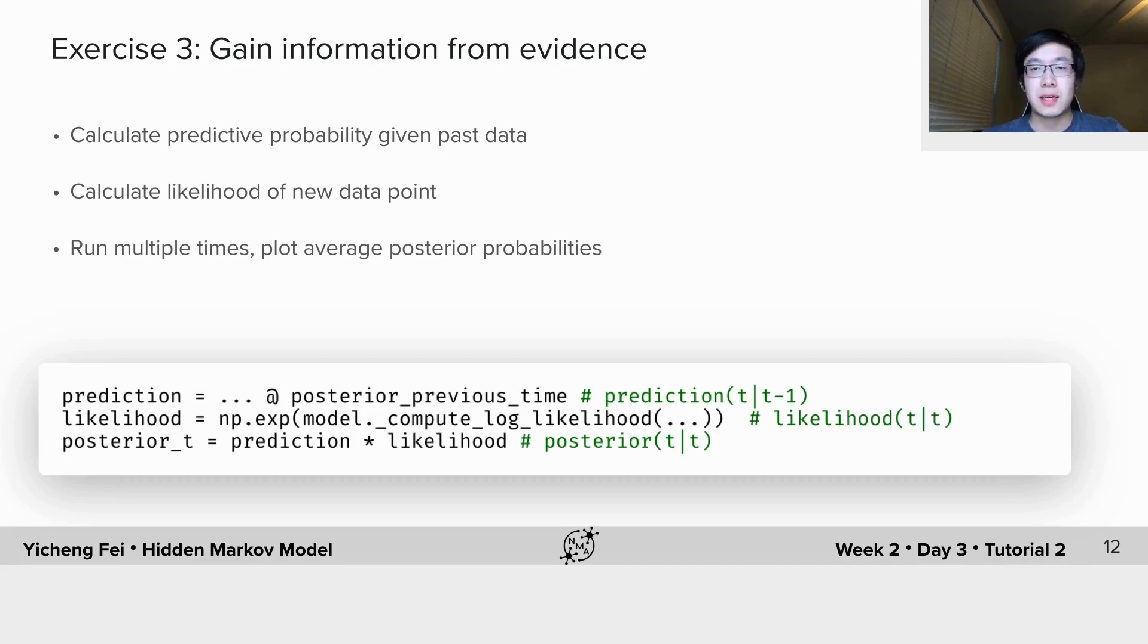You will implement this example in exercise 3. In terms of programming, you will calculate the predictive probability given past data by a one-step Markov transition. You then will need to calculate the likelihood of observing new data points. And the posterior is the combination of these two.